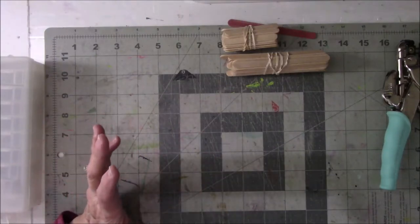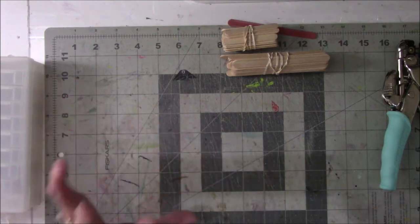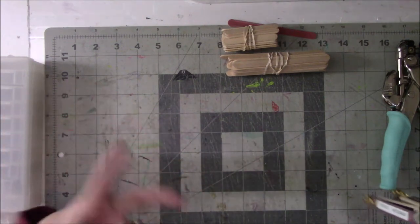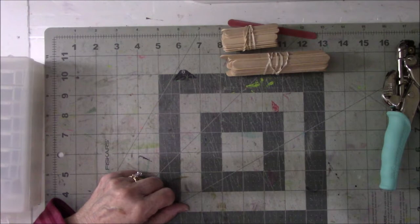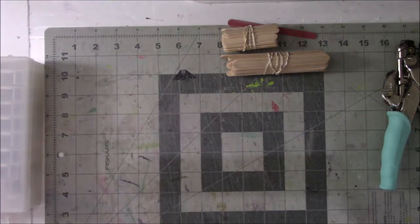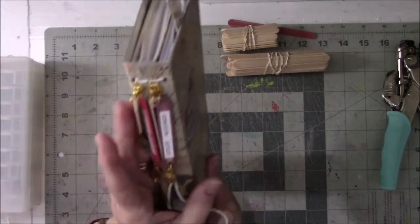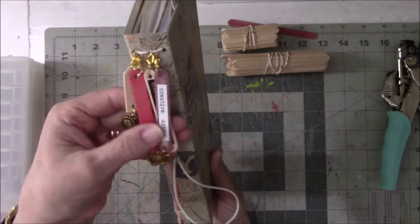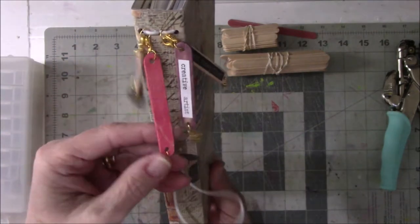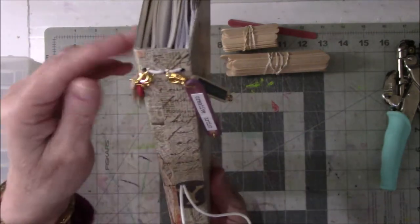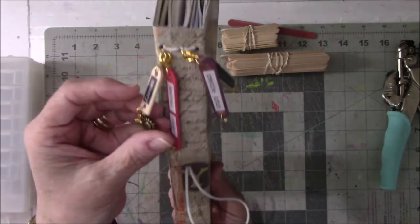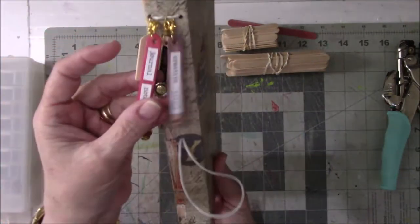Now I am not a ruffle feather lace kind of dangly sort of person, but I thought this was a clever idea. It's making dangles out of popsicle sticks, or she calls them lolly sticks. She's from the UK, I think, but these are incredibly easy to make.